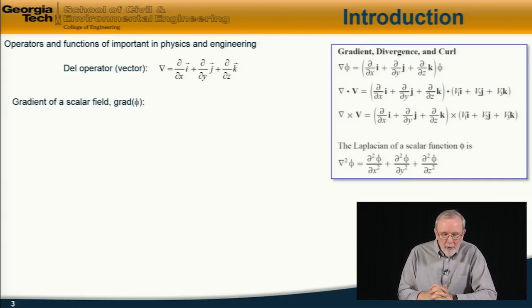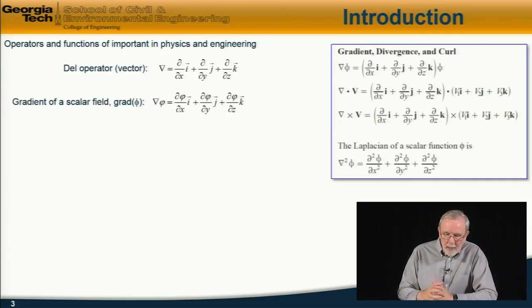So for example, the gradient of a scalar field, sometimes written as grad of phi, is given here. So grad phi is equal to d phi by dx times i, etc. And in simple two-dimensional space, this becomes just the local gradient of the field. So the gradient of a scalar field, generally speaking, is a vector quantity.